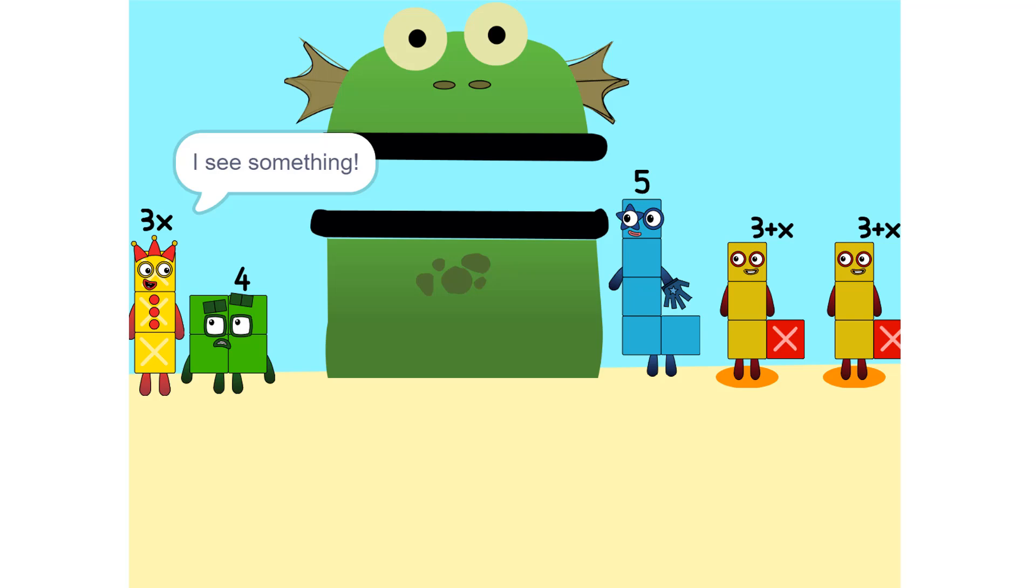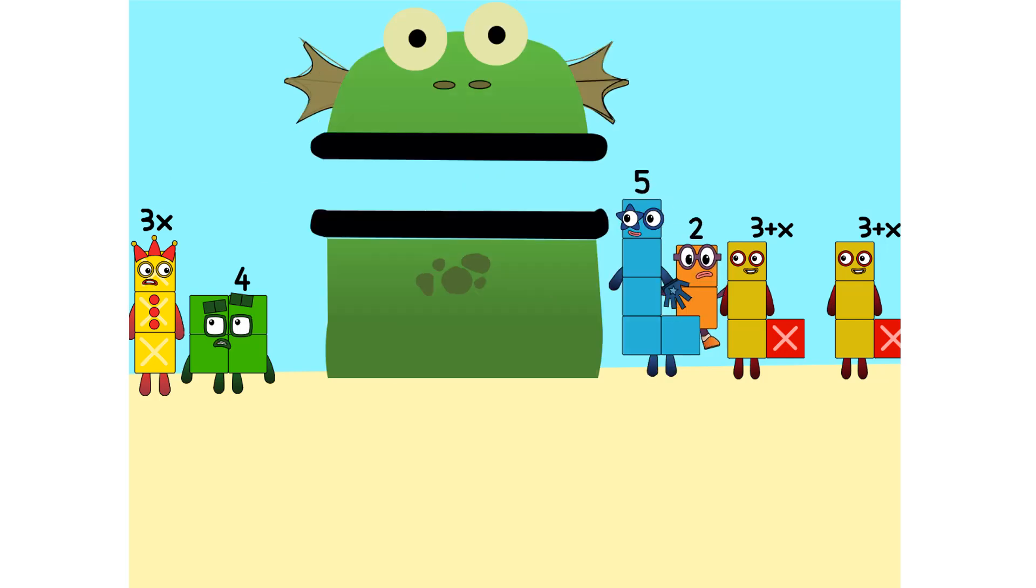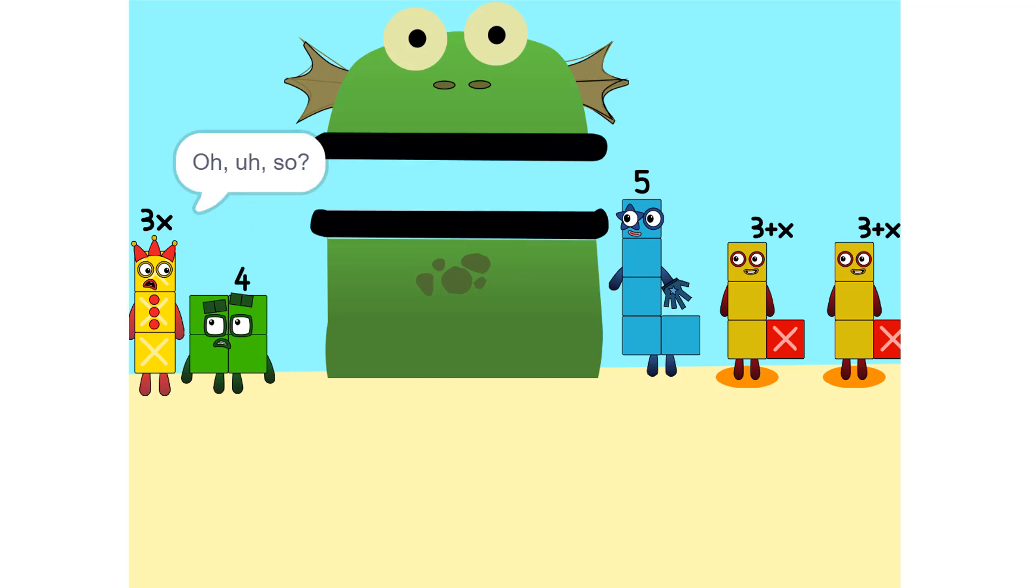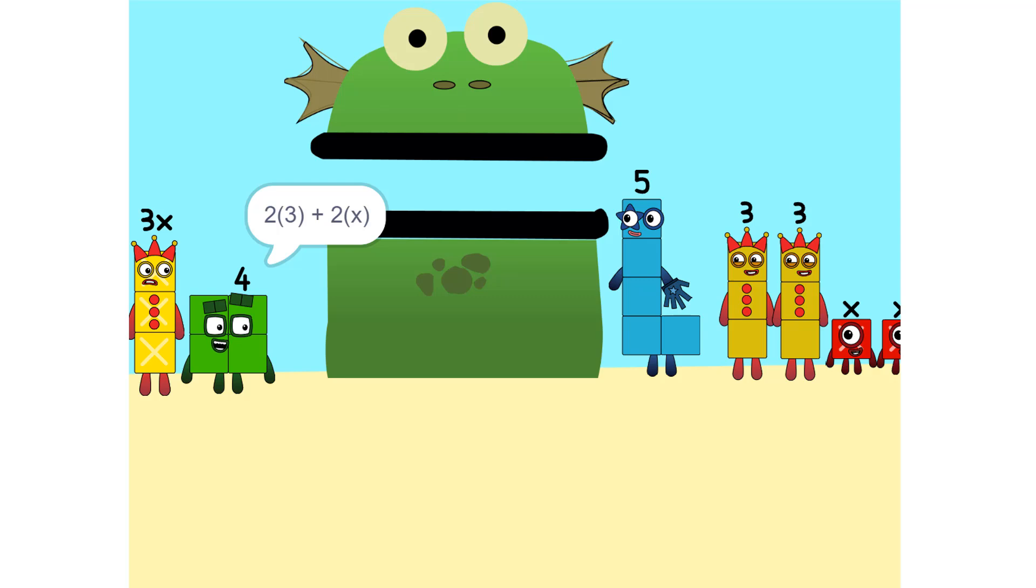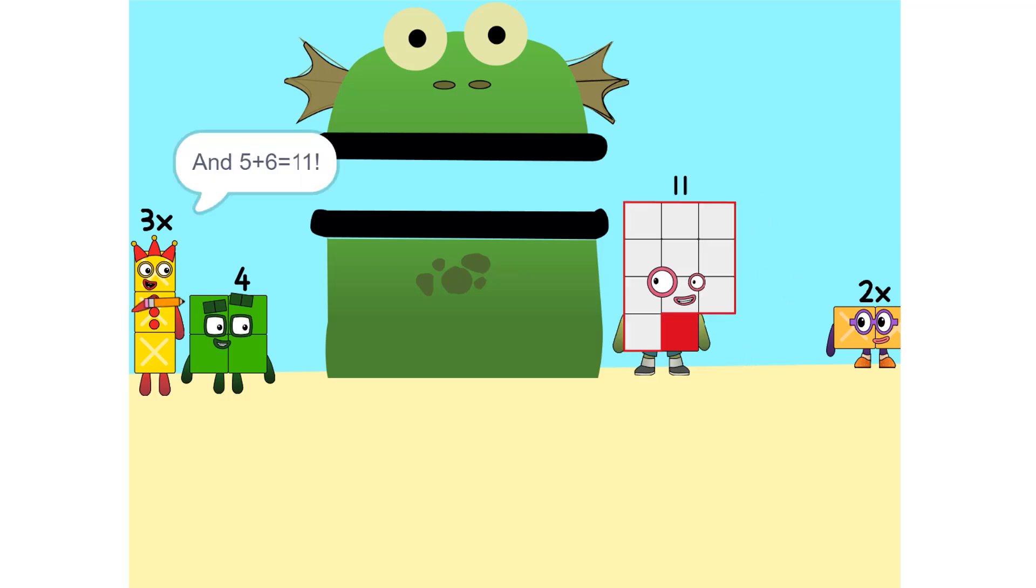I see something. We can add these. Stop! Why did that happen? Because the 2 is connected to the 3 plus X. Oh, so it's like adding apples and oranges. You can't. So what do we do? Okay, see the 2 times 3 plus X? That's the same as 2 times 3 plus 2 times X, which is 6 plus 2X. Oh. And 5 plus 6 is 11. Yeah.